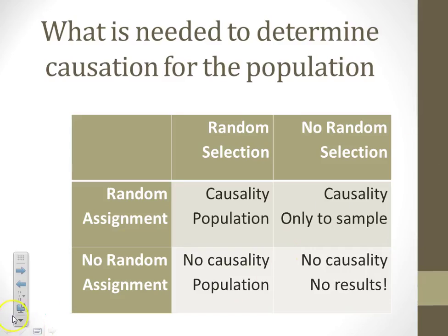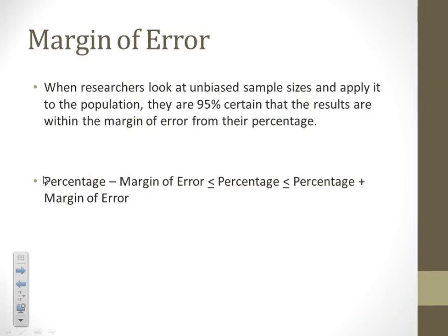We'll talk about margin of error. When researchers look at unbiased sample sizes and apply them to the population, we have what we call a confidence interval. It means they are 95% certain that the results are within the margin of error from the percentage. For example, in an election, if a candidate has 48% of the vote with a margin of error of 3%, that study is 95% confident that the actual percentage is within 51% and 45% of the vote. That's what margin of error means.